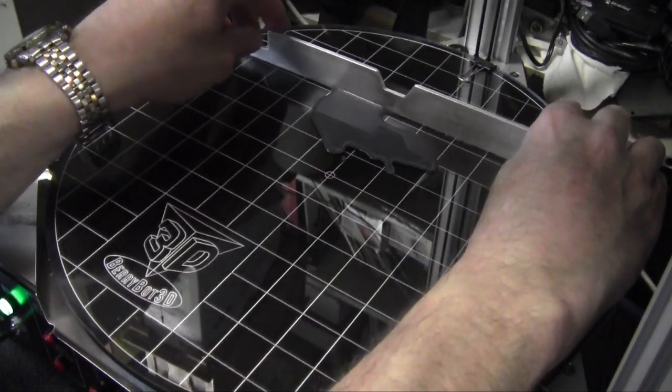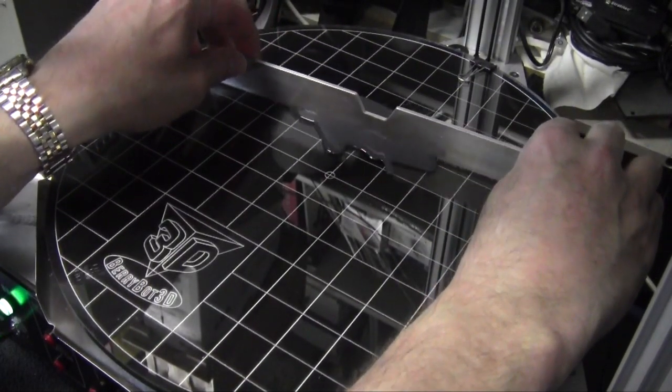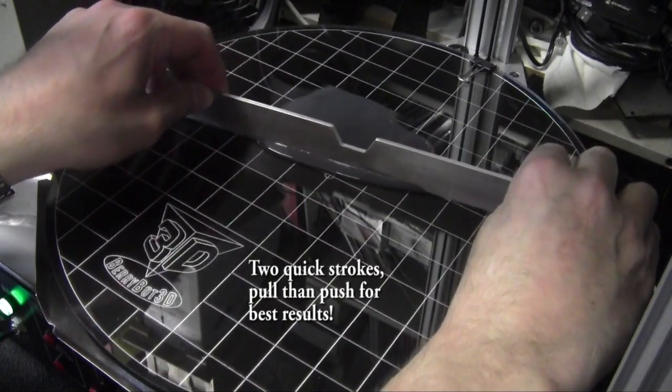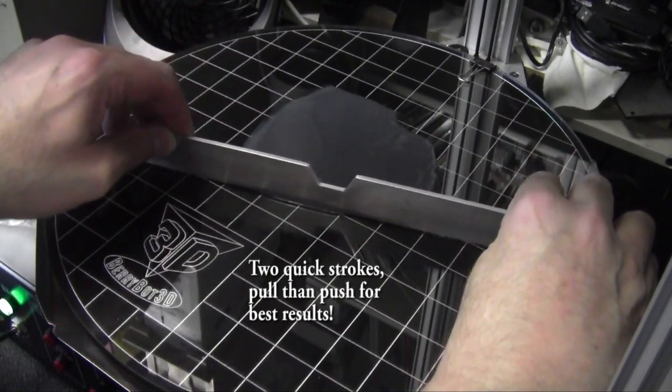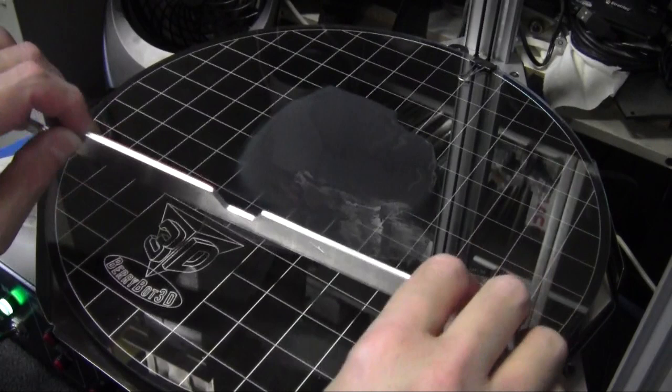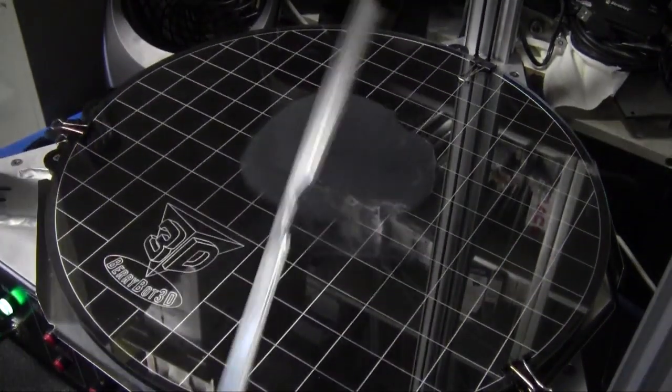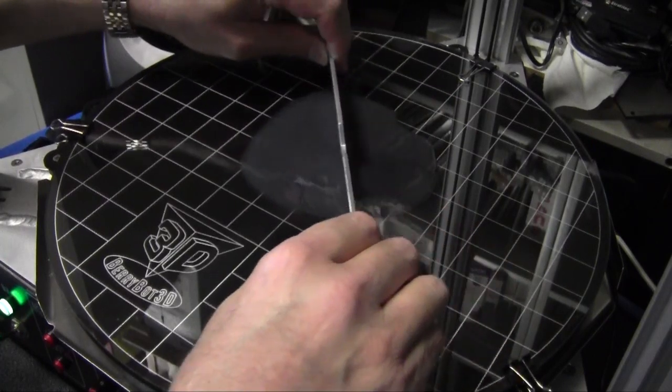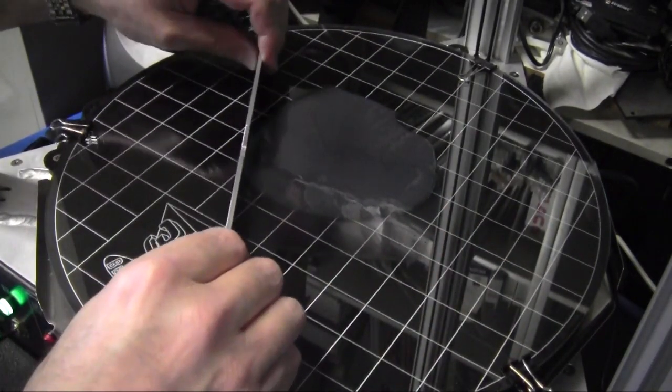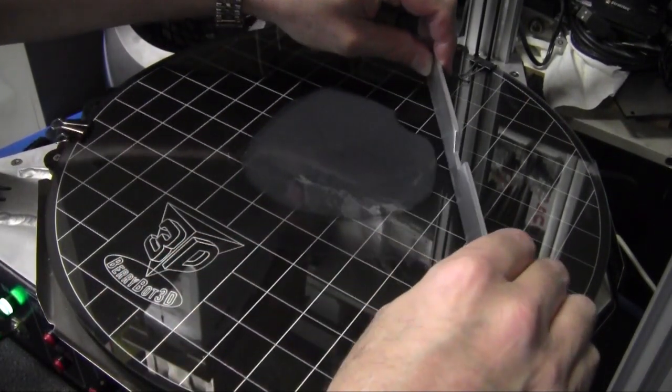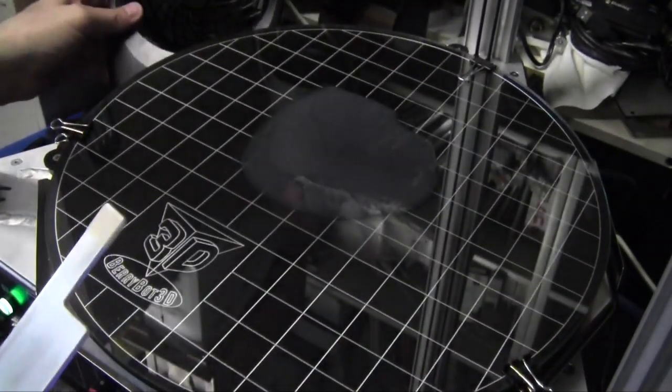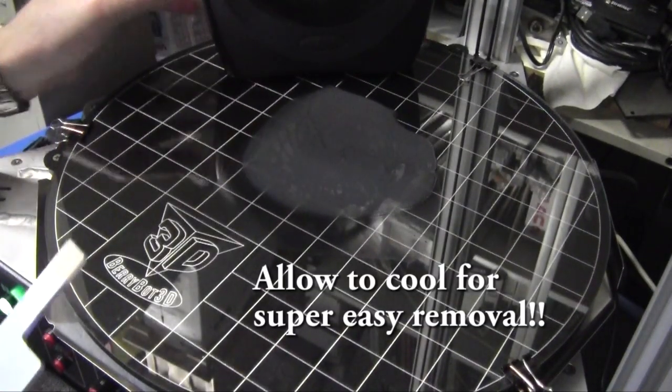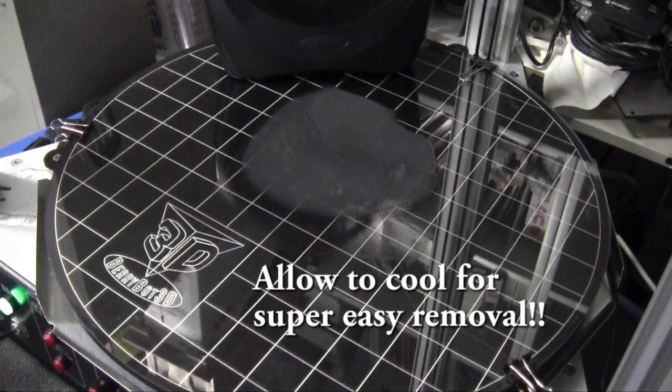So then what we're going to do is we're just going to pull this across the glass. And now I'm just doing a very small part. So it's not that big of a deal. But what this does is it just gives you a really even layer of ABS.